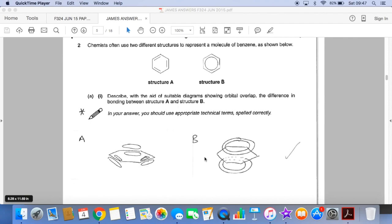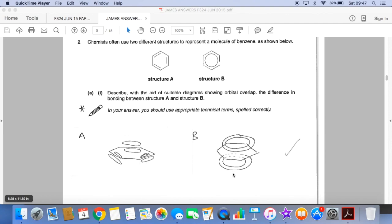And for B, it's the usual delocalised electron cloud above and below the ring. And then the explanation.